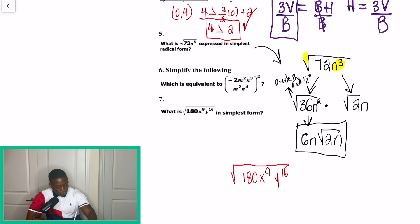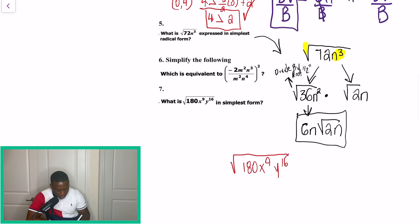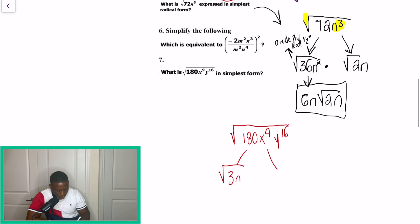So we have 180x to the 9th, y to the 16th. And let's see, what is the highest perfect square that goes into this? Let's see. Let's try 36 times 5. You know what? No. So when we're looking at this problem here, we're going to start off by breaking down 180. So 180 could break down to 36 multiplied by 5. Now, let's just put x and let's put y. Now, the highest even exponent or the highest even number before we get to 9 is going to be 8. So we're going to put x to the 8th power with the perfect square. And that left over x, we're going to put with the imperfect square, radical 5.